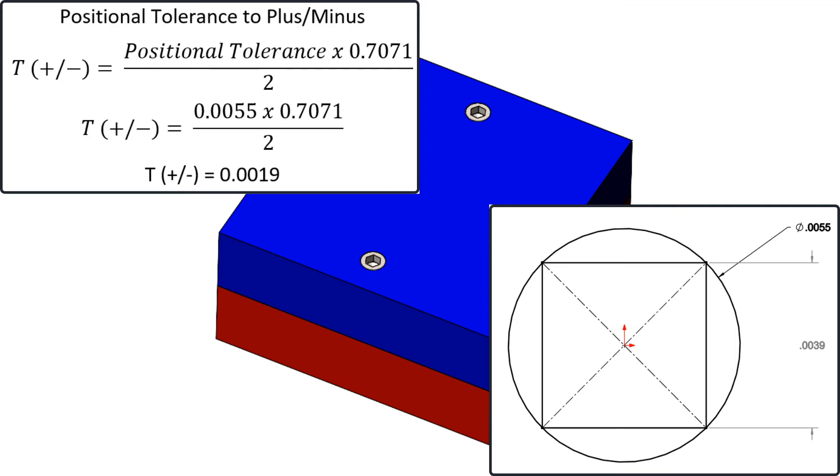The plus minus tolerance will be one half of the perfect square which can fit inside of the cylindrical zone. The formula to find the plus minus tolerance is the diameter of the zone times 0.7071 divided by 2. In the case of the five and a half thou positional tolerance, the plus minus tolerance would be plus or minus one thou nine tenths, and there is no longer bonus tolerance.